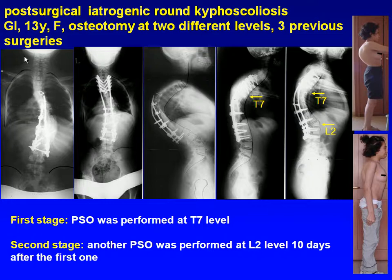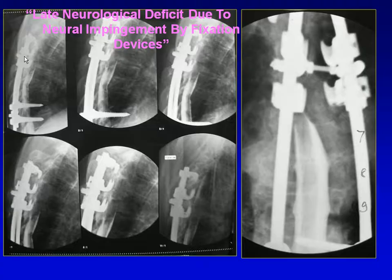She had four previous surgeries in another center. At the first stage, pedicle subtraction osteotomy was performed at T7. At the second stage, another pedicle subtraction osteotomy was done at L2, ten days after the first one. Another case involved late neurological deficit due to metallosis.